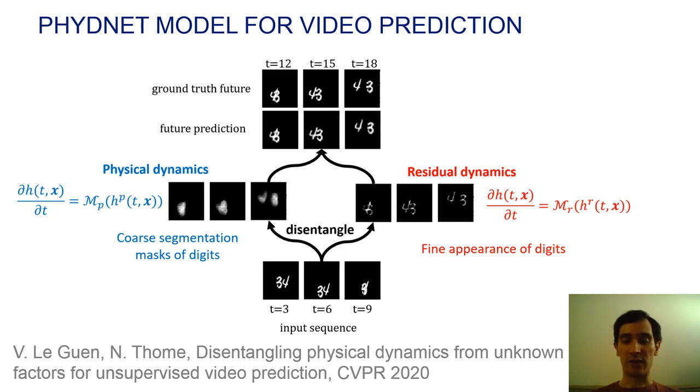But since physics is often insufficient to fully describe generic videos, as in this moving MNIST example, we learned a data-driven residual branch responsible for capturing complementary information. In this example, physics captures coarse moving segmentation masks and the residual captures the fine appearance of digits.